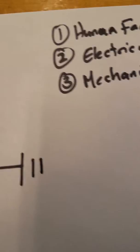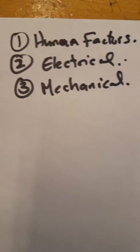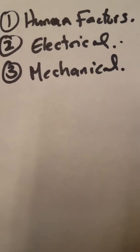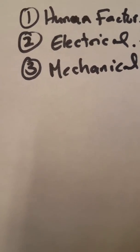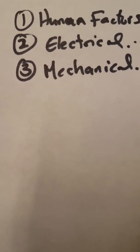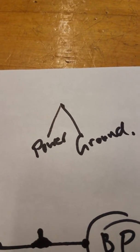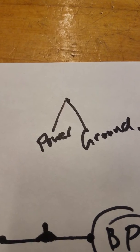You can remedy a human factors issue by finding the proper manual reference and signing it off. The other category is electrical. Electrically, there are only two parts that make an electrical system work: power and ground. Those are the only two reasons it would not work electrically.